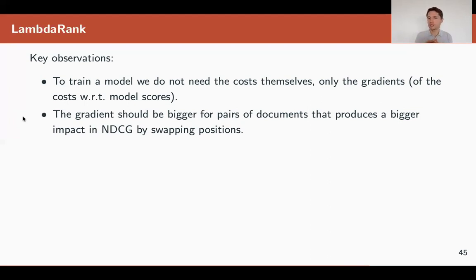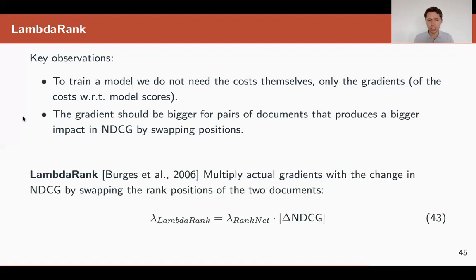But here it's not possible because our cost functions, which are evaluation metrics, are non-differentiable. But we don't need to write down the cost itself. We only need the gradients. And the gradients should be bigger for pairs of documents that produce bigger impact on our loss functions, on our desired evaluation metrics like NDCG.